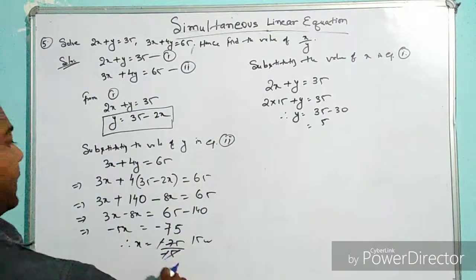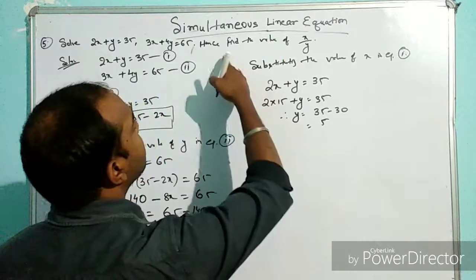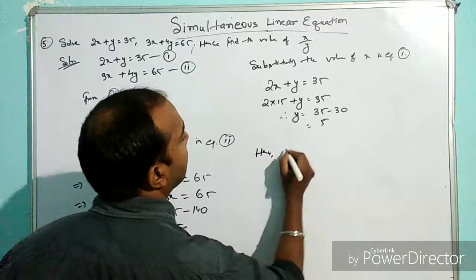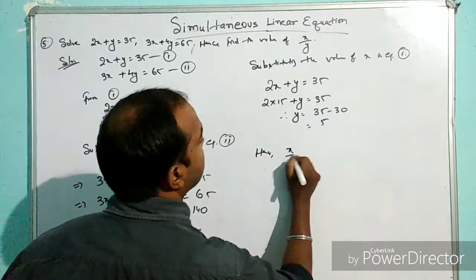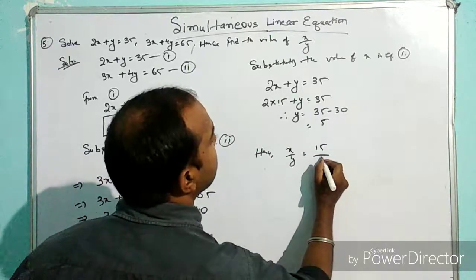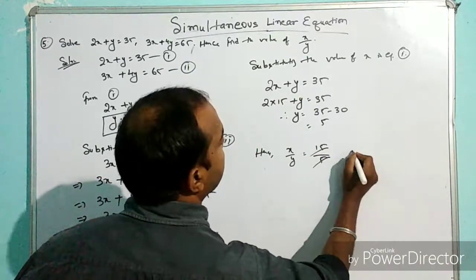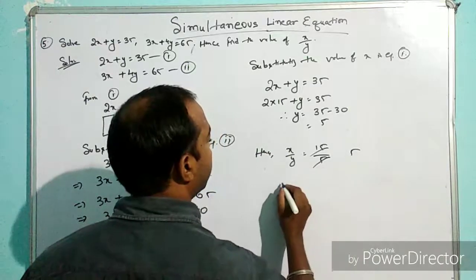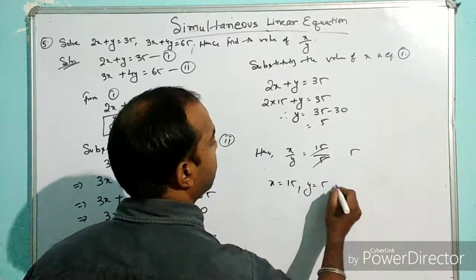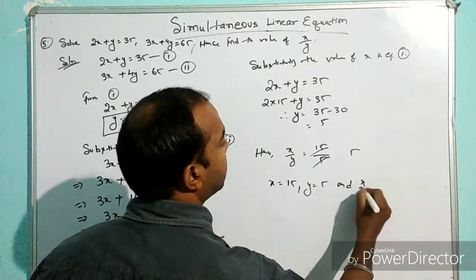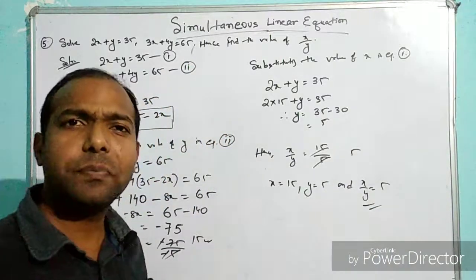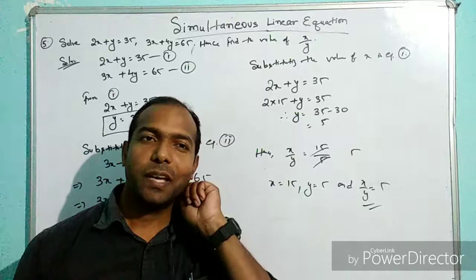We have got the value of x and the value of y. Hence, x = 15 and y = 5. So this is solved, very simple, it was very easy, right?